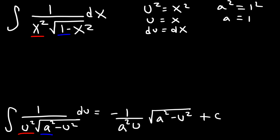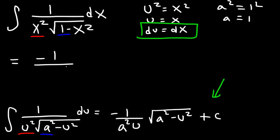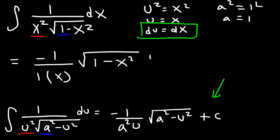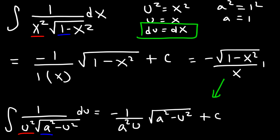Since du equals dx, we can simply plug everything into the formula. The answer is negative 1 divided by a squared, which is 1, times u, which is x, times the square root of a squared minus u squared — that's 1 minus x squared, plus c. So the final answer is negative square root of 1 minus x squared over x, plus c.